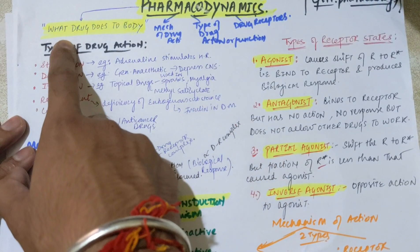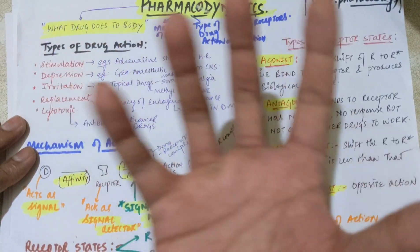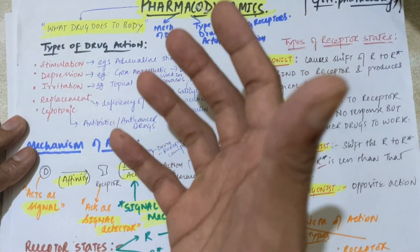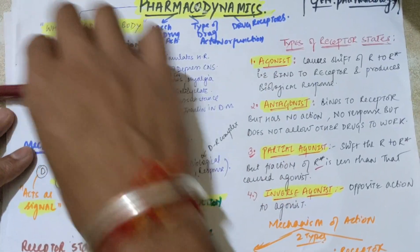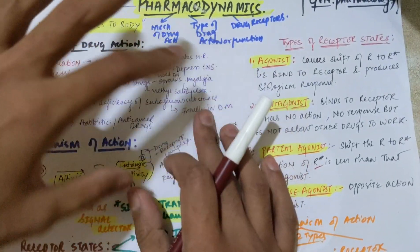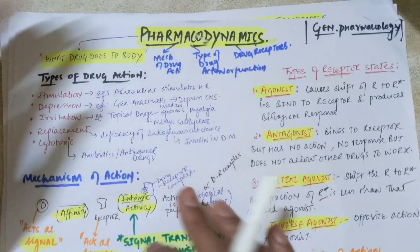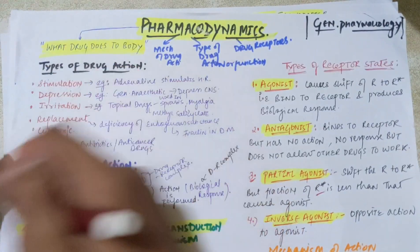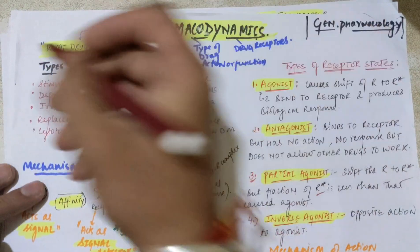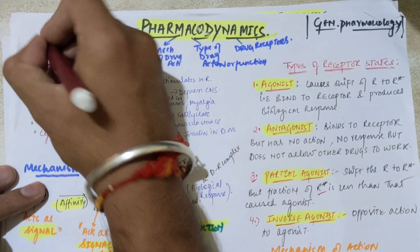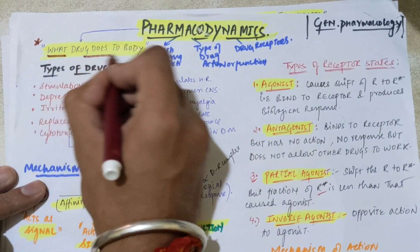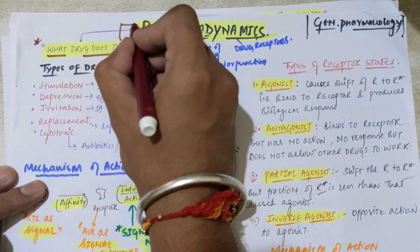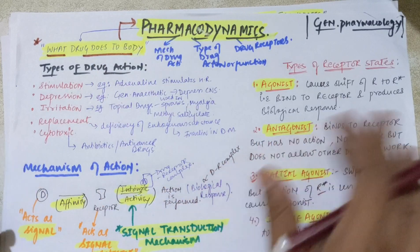As you know, pharmacodynamics is what does the drug do to the body, and pharmacokinetics was what the body does to the drug. Now in this video we will be seeing what drug does to the body — the meaning of pharmacodynamics.